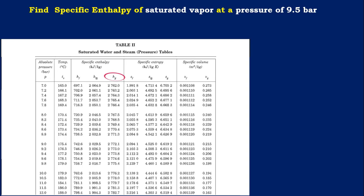To do interpolation, let's take the before and after values. The enthalpy of saturated vapour at a pressure of 9.4 bar is 2773.8 kJ/kg. Similarly, the specific enthalpy of saturated vapour at a pressure of 9.6 bar is 2774.6 kJ/kg. In order to find enthalpy at 9.5 bar, first find the ratio between change in enthalpy to the change in pressure for the before and after values.